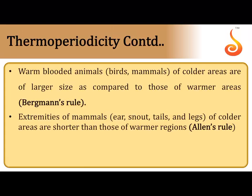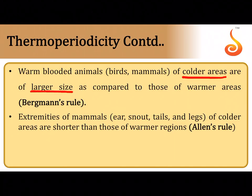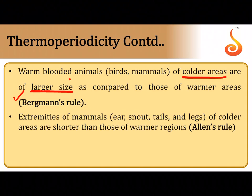Warm-blooded animals in colder areas have a larger body size to decrease their surface area-to-volume ratio, compensating for heat loss by generating more heat in their body. This is referred to as Bergmann's rule — warm-blooded animals in cold areas have larger size, meaning a lesser surface area-to-volume ratio. With a lower surface area-to-volume ratio, heat loss is compensated by the enormous body volume.